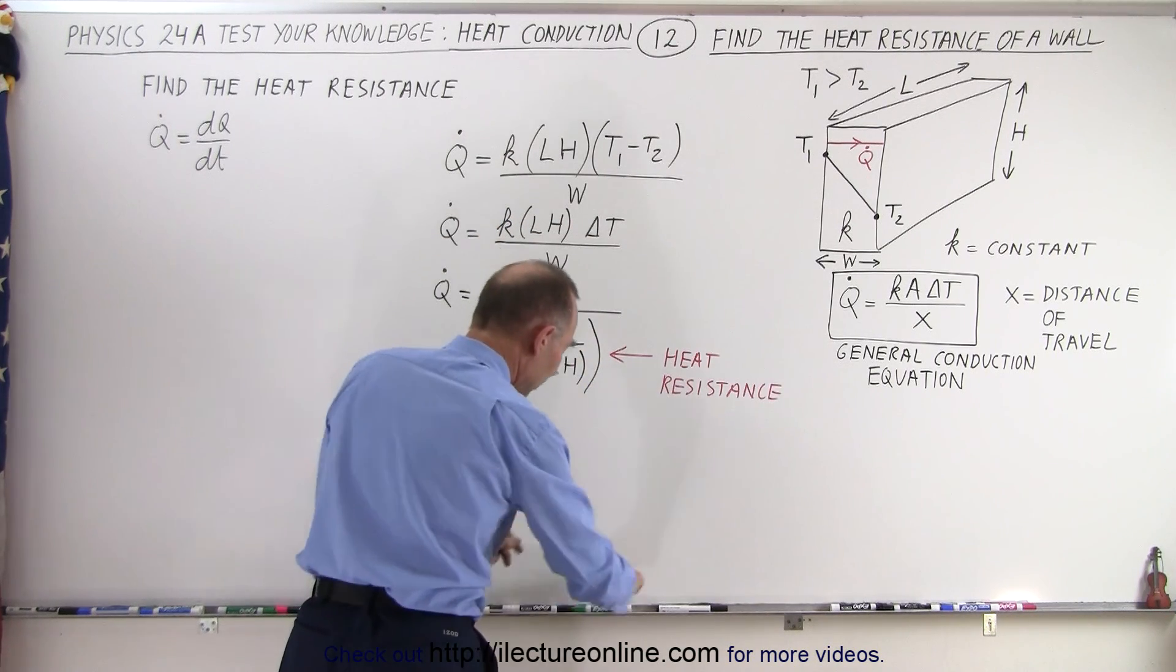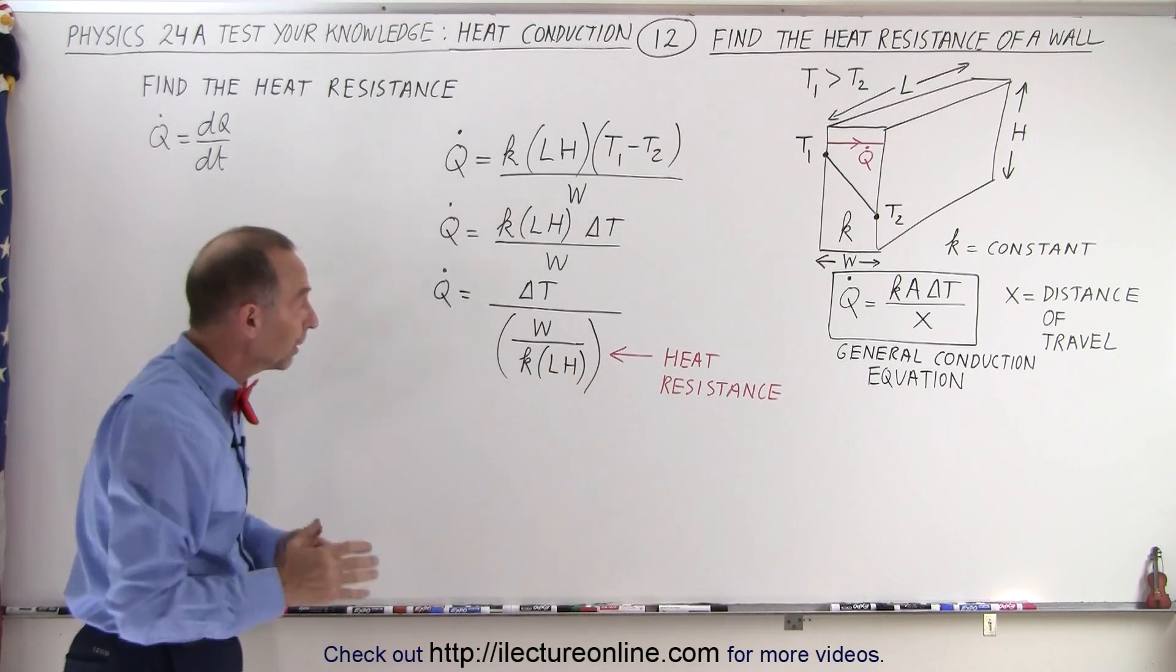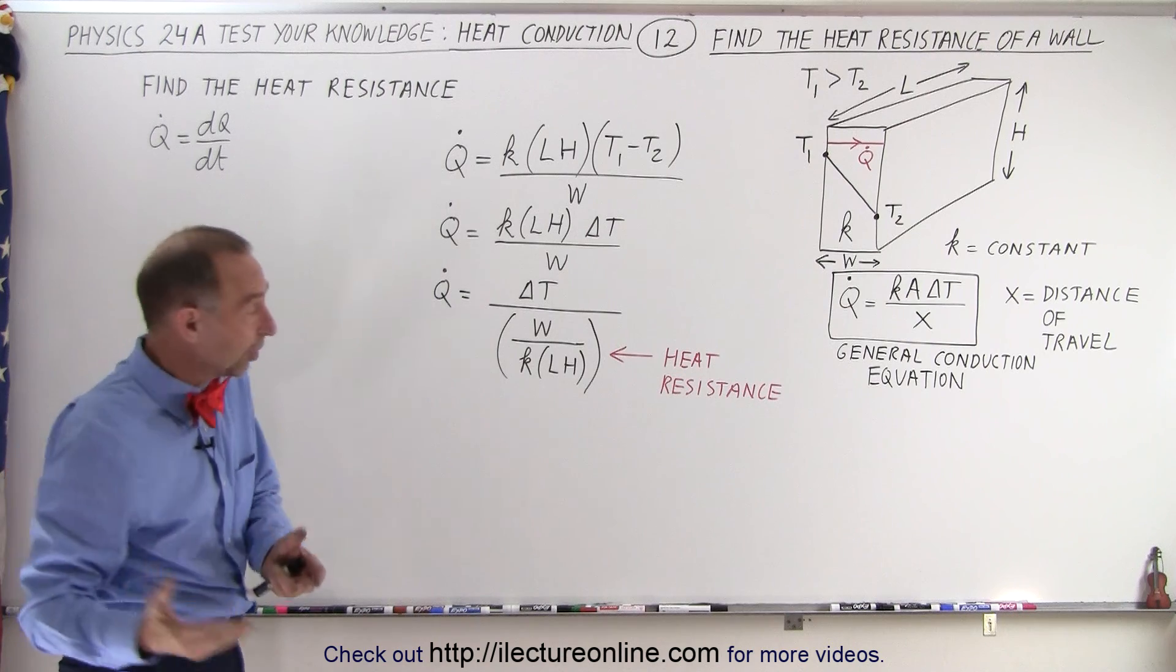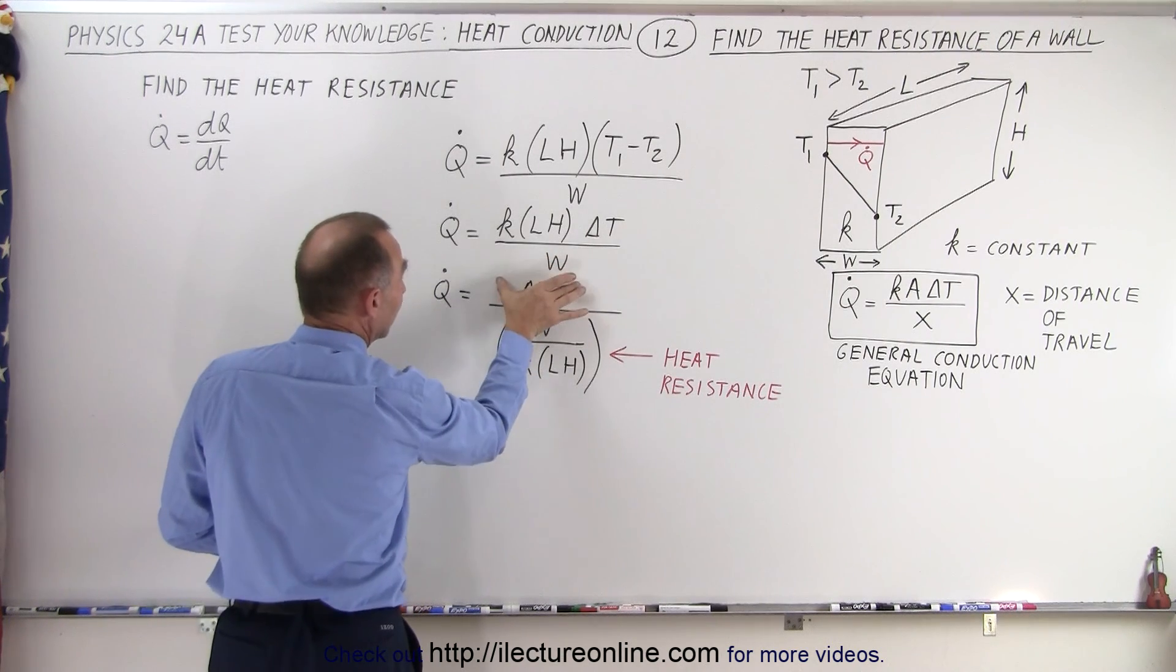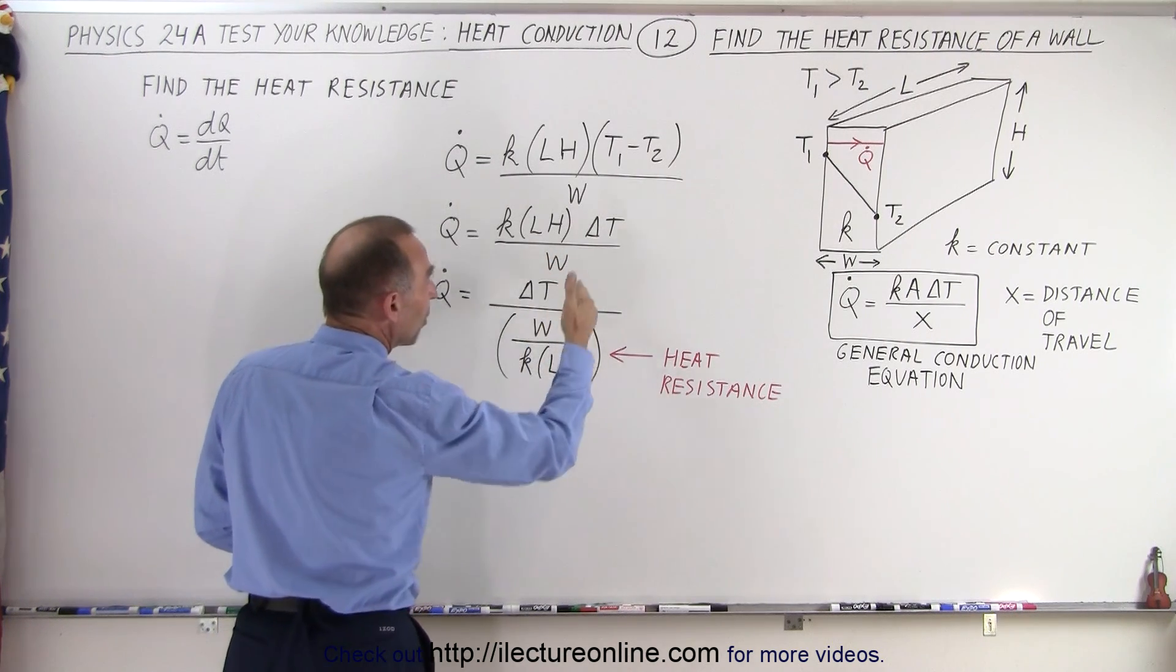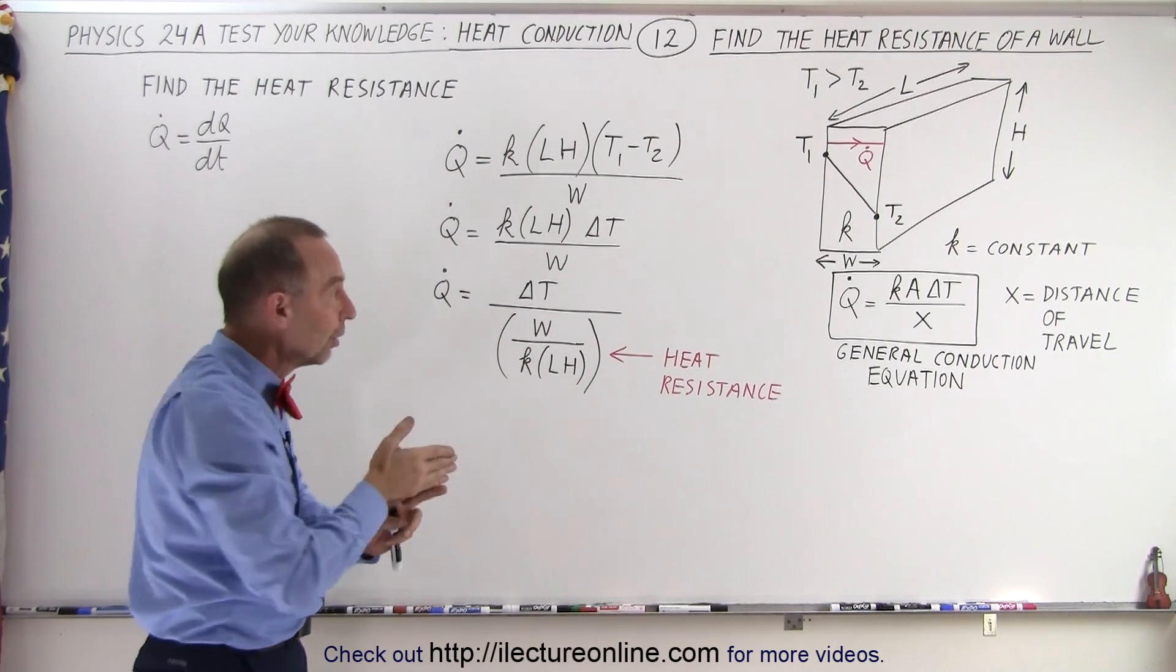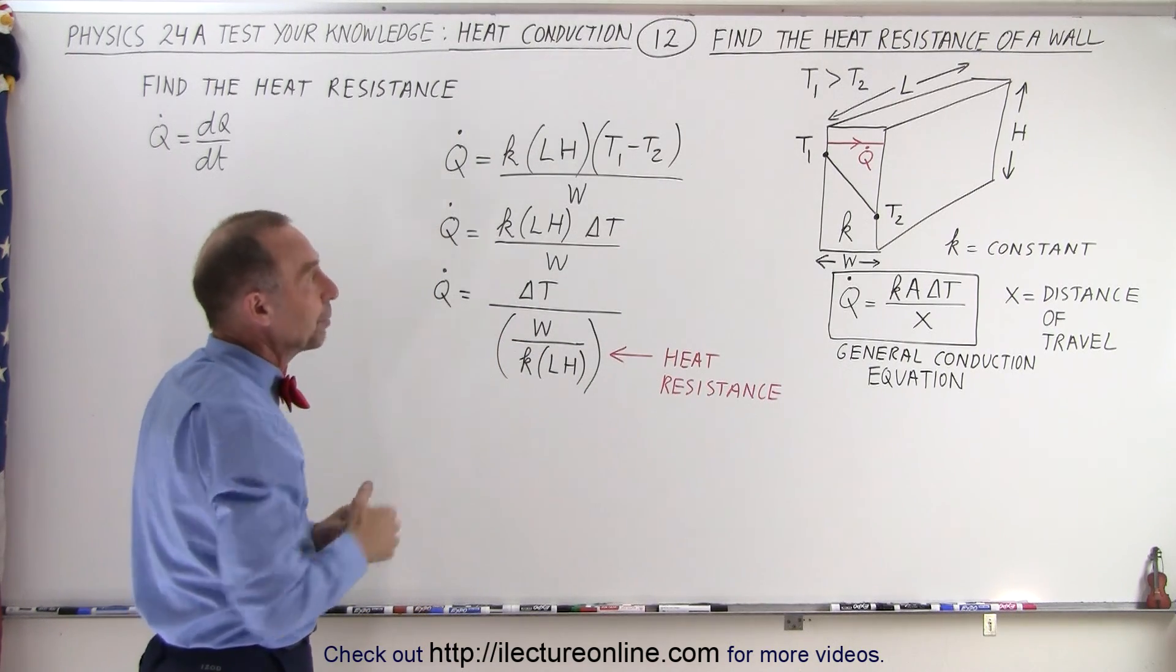Now, what would happen if we have multiple layers? Well, the multiple layers equation, just like we saw for the cylinder, is simply going to be the delta T in the numerator plus the sum of all the heat resistances for every section of the layer, for every layer of a particular wall.